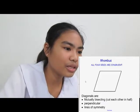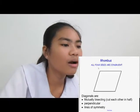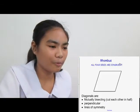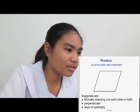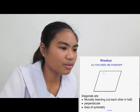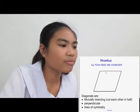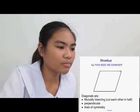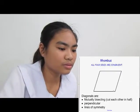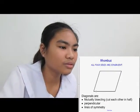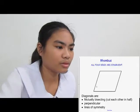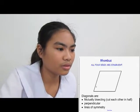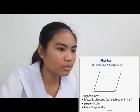All four sides of a rhombus are congruent — that's what makes a rhombus a rhombus. It's like a square, but a square has to have 90-degree corners, and you can see that these are not right angles here. The square is a type of rhombus, but rhombuses in general don't have to have 90-degree corners.